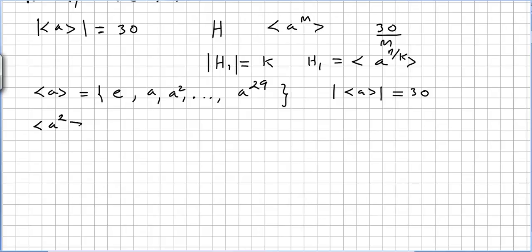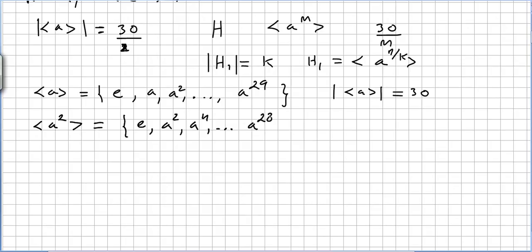Now we will have another group generated by A to the power of 2. 2 divides 30 — you get 15. So this will be the group generated by A squared: the identity, A squared, A⁴, and this will finish in A²⁸, because A²⁹ will not be there anymore. So the order of this will be 15.